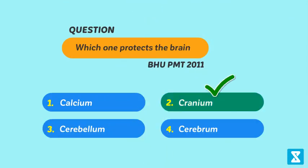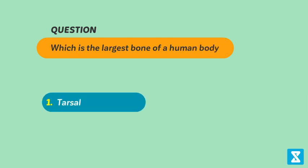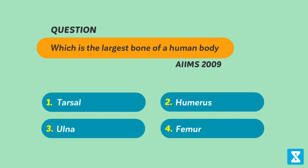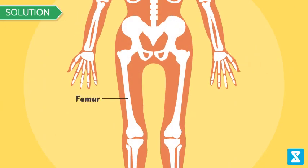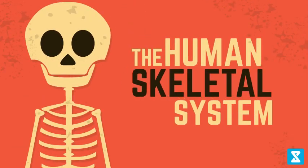Question: Which is the largest bone of a human body? (1) Tarsal, (2) Humerus, (3) Ulna, (4) Femur — asked in AIIMS 2009. The femur or thigh bone is the longest bone of a human body; hence option 4 is the correct answer. This concludes our video on the human skeletal system. Students must memorize all important bones of the body to answer questions on this topic. Thanks for watching.